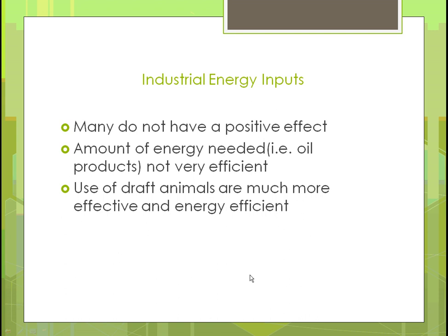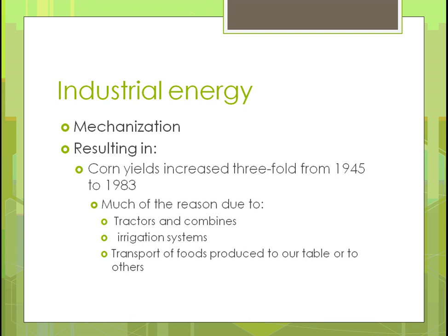From 1945 to about 1983, the amount of product produced increased threefold. The primary reason was that corn itself grew better, but mechanization also played a role — tractors and combines allowed us to plant and harvest more. Irrigation systems also helped produce better crops by delivering water at the right growing points.